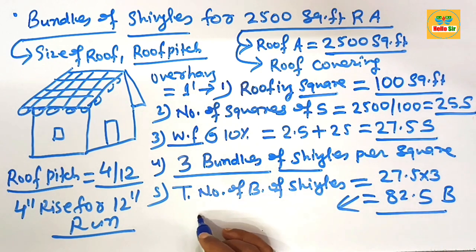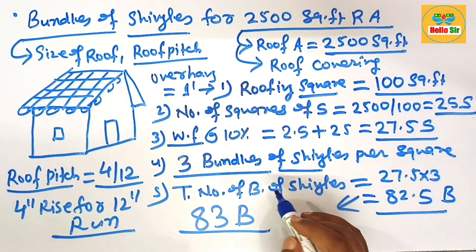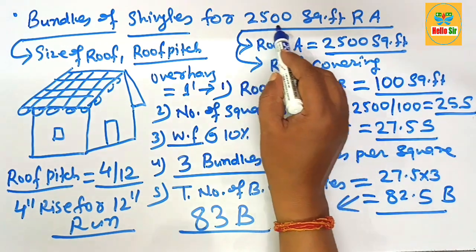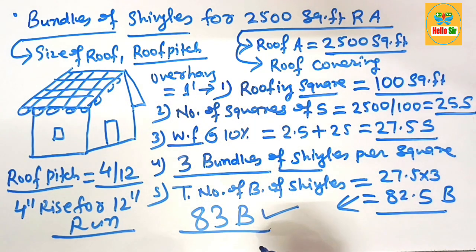It means around that one. It means you need about 83 bundles of shingles to cover 2500 square foot roof area. That is your answer. Thank you.